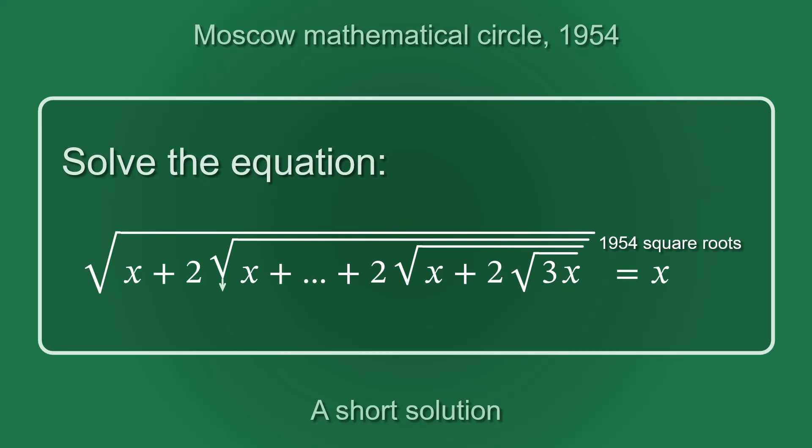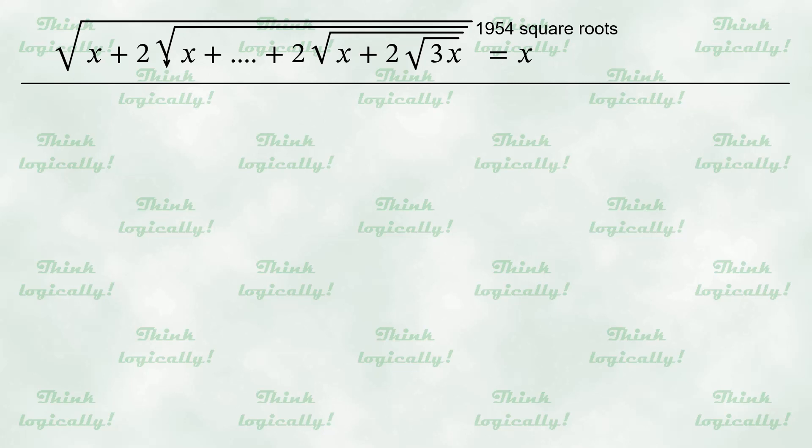Now let's solve together. We start with defining the domain, of course. Since we have 3x under the square root sign, x must be a non-negative real number. It can be easily seen that if x is non-negative, the expressions under all square roots are non-negative. This makes the values of all square roots defined.